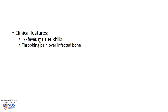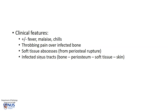Clinically, patients may present with systemic symptoms like fever, malaise, and chills, and they often have this throbbing pain over the area of the infected bone. There may even be soft tissue abscesses — if the infection from the bone breaks through the periosteum overlying the bone, this can involve the surrounding soft tissue and can go all the way into the skin, giving rise to infected sinus tracts leading from the bone all the way to the skin.